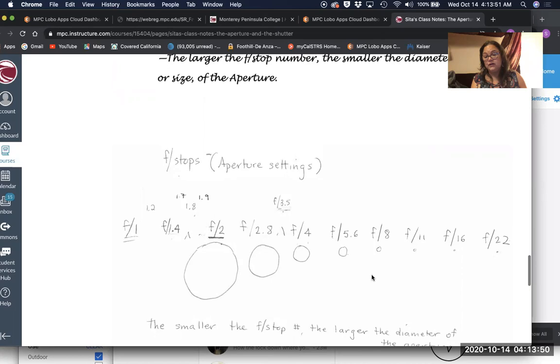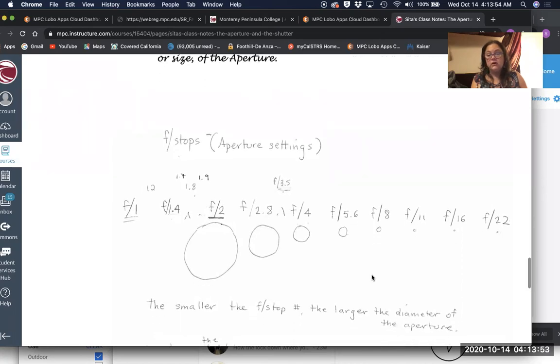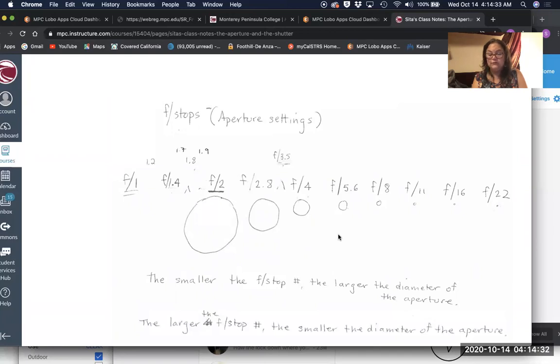So as with the shutter speeds, I've given you some aperture settings, the f-stop numbers, and these are again the whole stop numbers. So all lenses have these f-stop numbers. Some lenses go beyond f22, others open up beyond f2, but within those parameters all lenses have these f-stop numbers. Your lens may also have half-stop increments or one-third stop increments. It depends on the lens and the manufacturer, but you will see these f-stop numbers.